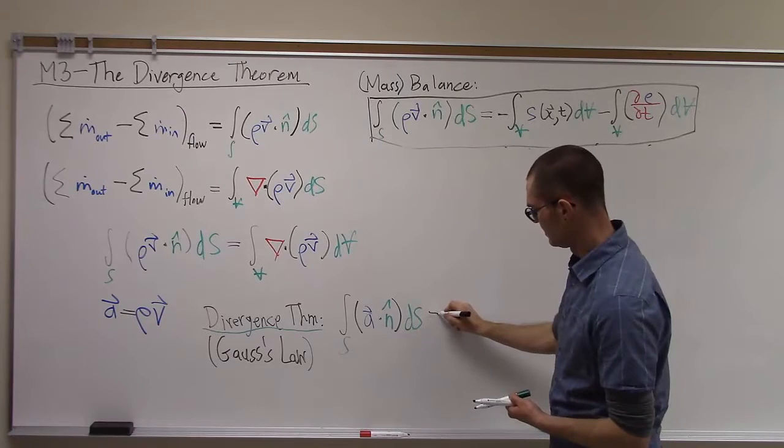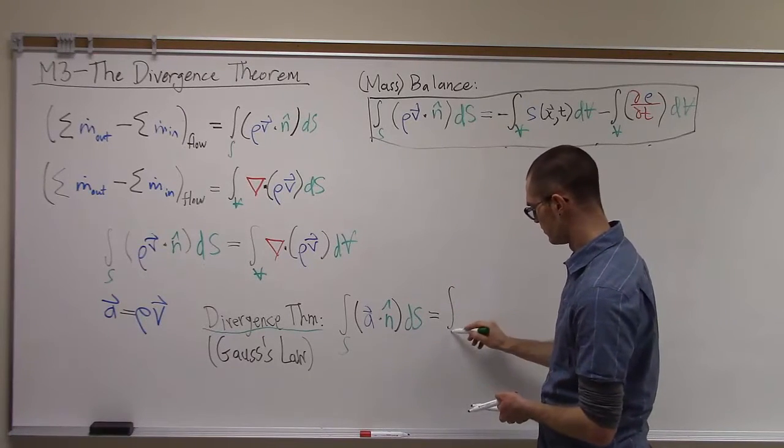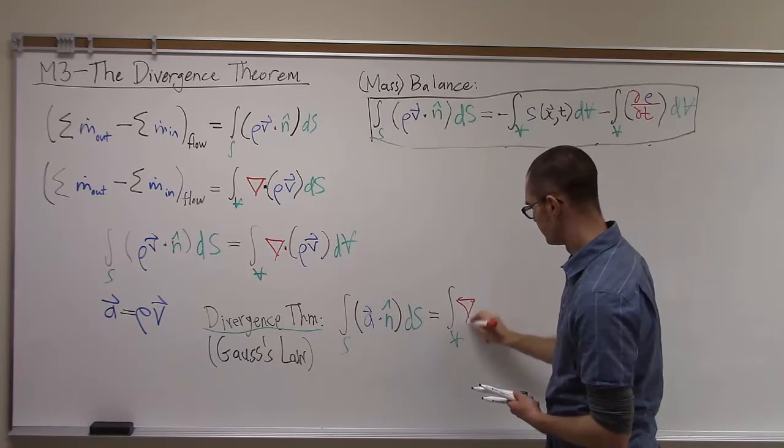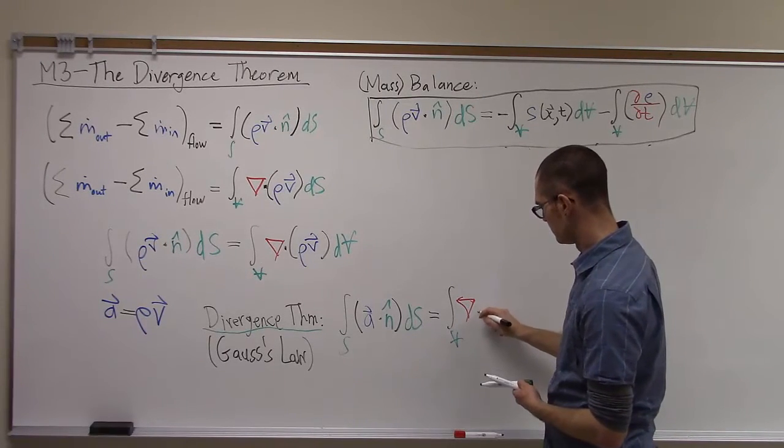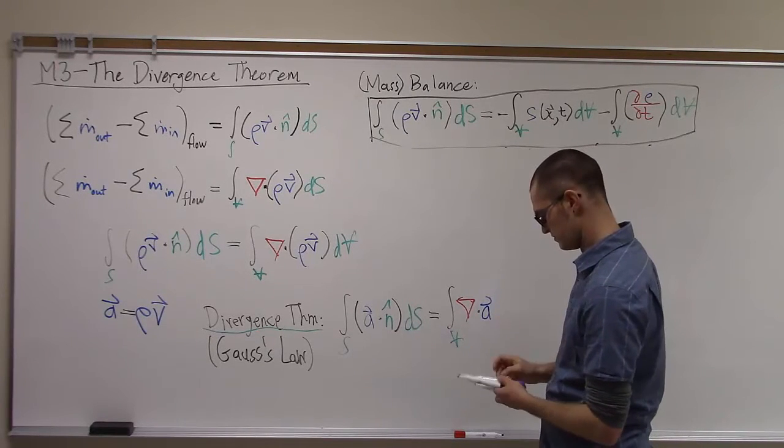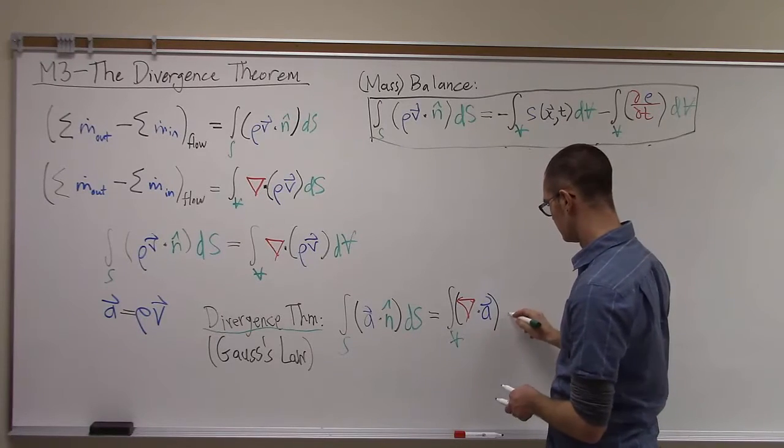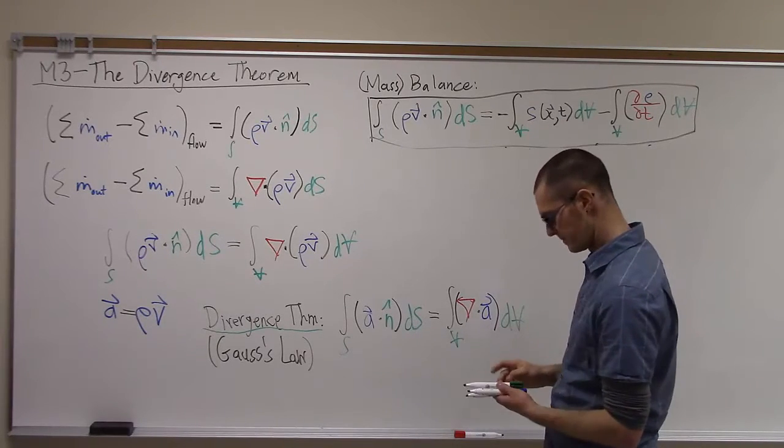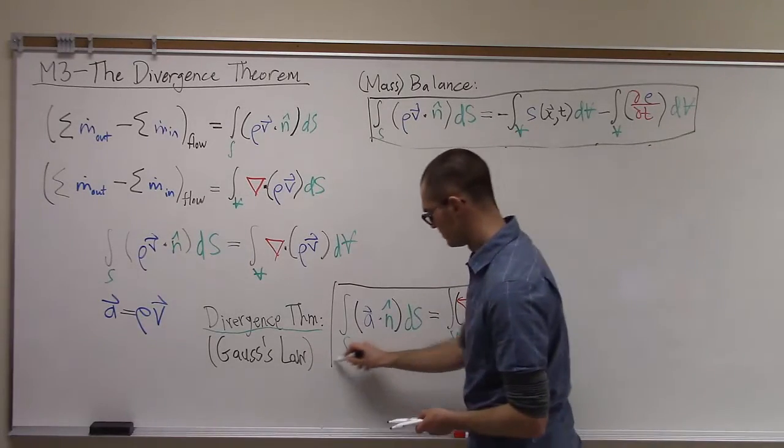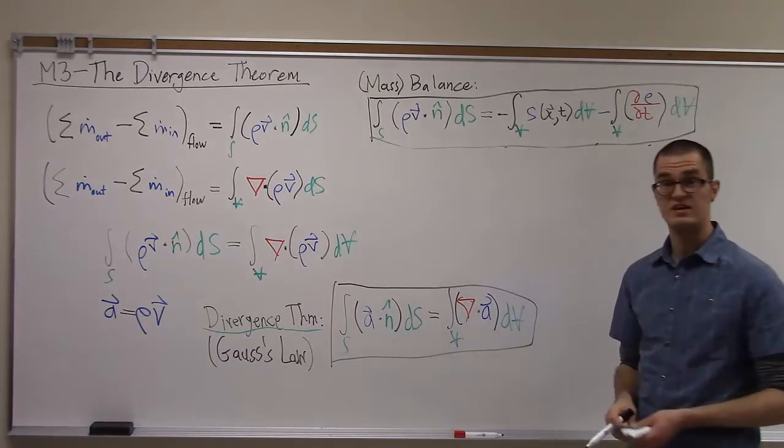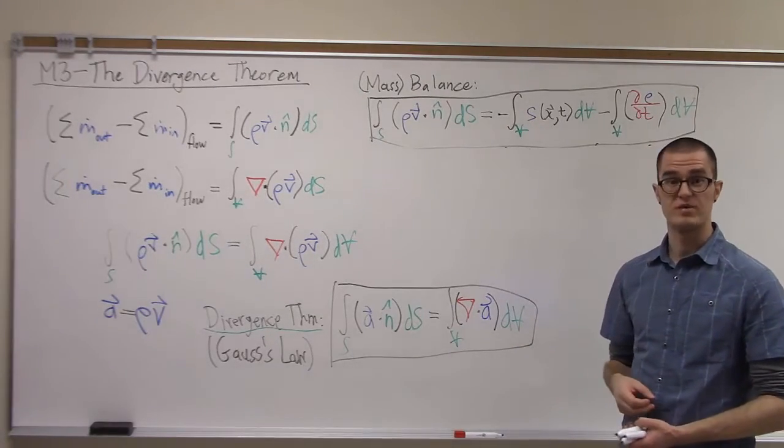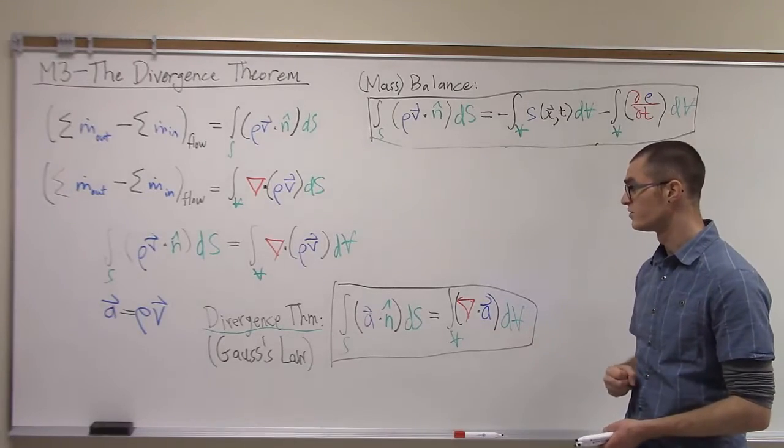is equal to the integral over the volume of the divergence of A, dV. So now we have a physical interpretation of what the divergence that we spoke about in our previous set of videos about the vector operator - what does the divergence actually mean?